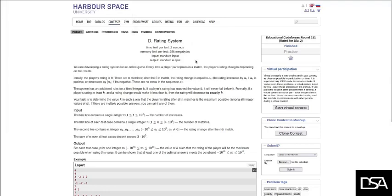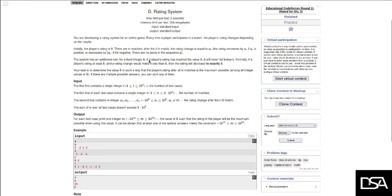Hello everyone, this is QtD rating system of educational Codeforces round 151. Here we are given n matches and the rating change is equal to ai. We want to find a value k such that if the player rating reaches the value k, it will never fall below it. So we need to determine the value of k.